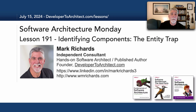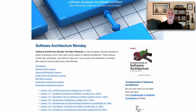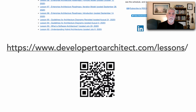Hello everyone and welcome to Software Architecture Monday. My name is Mark Richards and in this lesson number 191, we'll take a look at identifying components with a technique I call the Entity Trap. Based on that name, you might guess this is actually an anti-pattern, and I want to show you how to avoid it. You can get a listing of all the lessons at developer2architect.com/lessons.